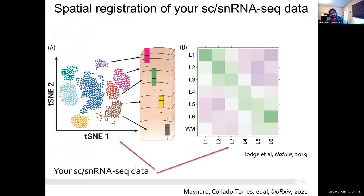Now that we have some new marker genes, we are going to try to register the expression and basically match what we have on the single nucleus level versus the information we just generated at the spatial resolution. We now have genes we know are enriched for expression across multiple layers of the brain. You might also have data from a single nucleus project that allows you to measure expression at a single cell level — every point on the left side is a single cell — and you can group them into clusters.